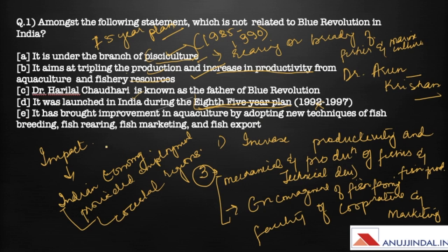The fifth statement says it brought improvement in aquaculture by adopting new techniques of fish breeding, fish rearing, fish marketing, and fish export — this is also correct.